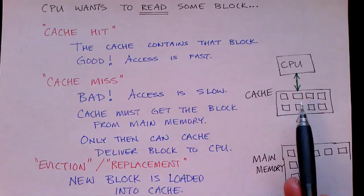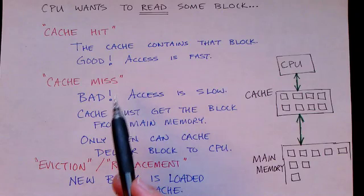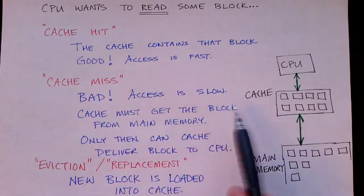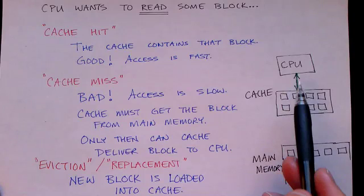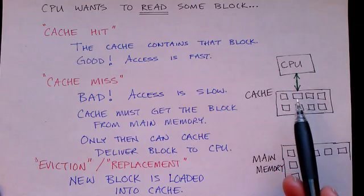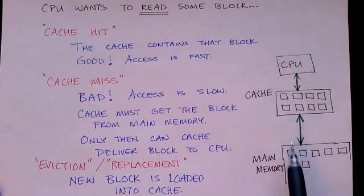However, the cache may not contain the block, in which case we have a cache miss. And this is bad because it's going to require some additional time to get the data. So cache hits are fast, cache misses slow things down quite a bit. If it's a miss, the cache has to get the block from main memory.